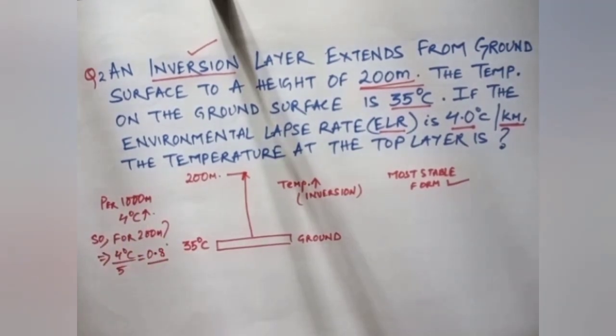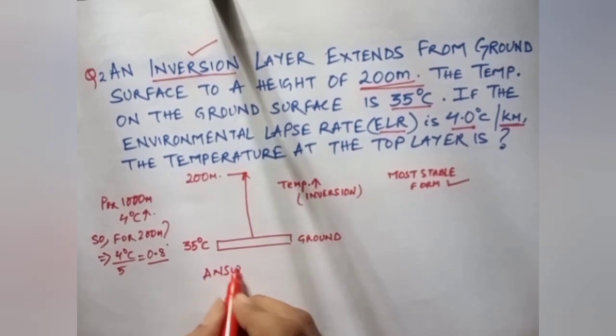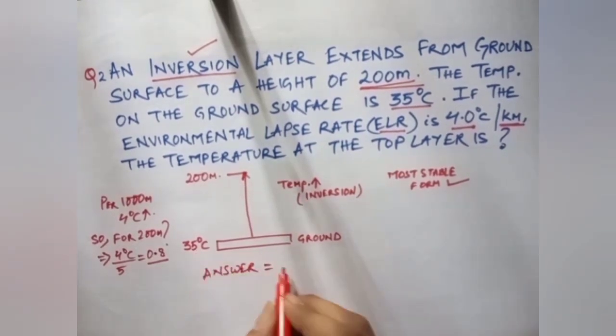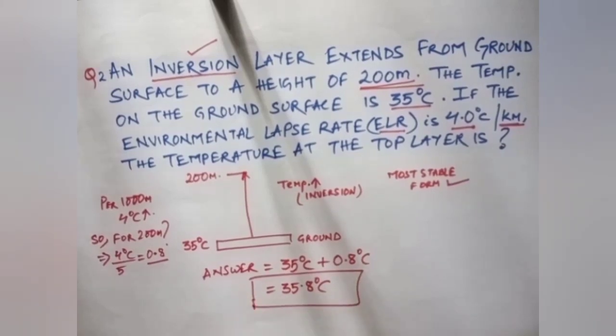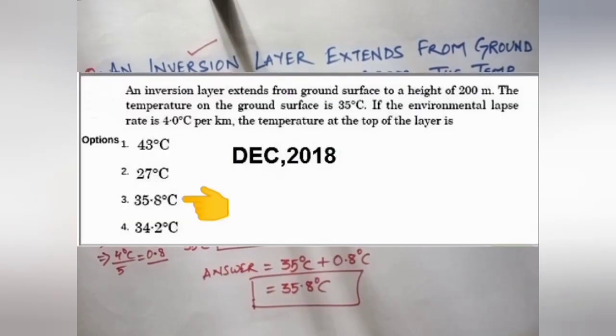So 4 by 5 is 0.8. So now let's see what will be the answer of this question. The answer will be very simple: 35 degree celsius is the ground temperature. We have to just add 0.8 degree celsius to it because it is inverse. So the temperature at 200 meter in the case of inversion will be 35.8 degree celsius.